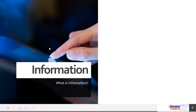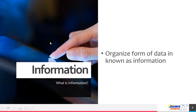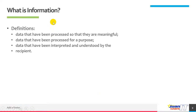Now let us define information. Information is an organized form of data — it is processed data. The definition of information includes data that have been processed so that they are meaningful. Data have been processed for a purpose, and data have been interpreted and understood by the recipient.